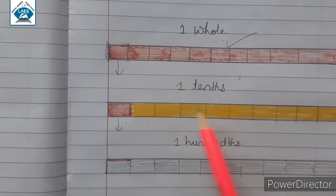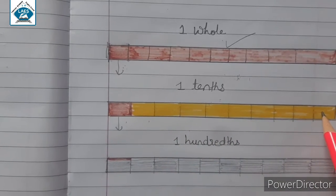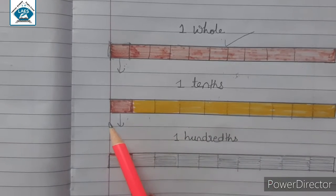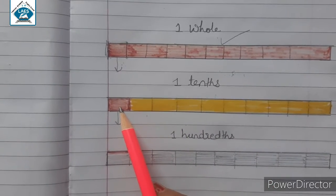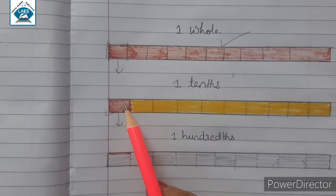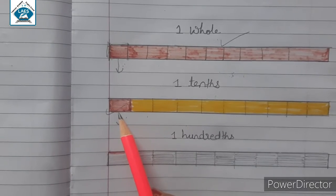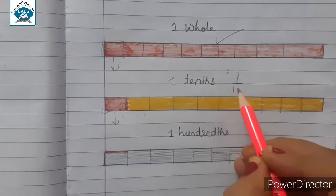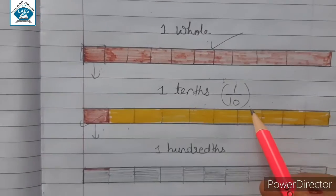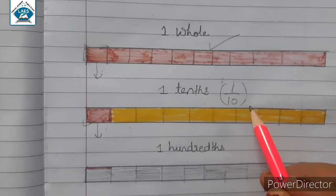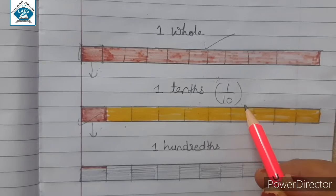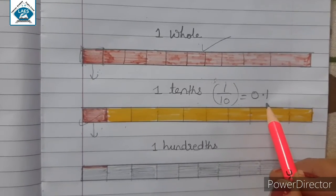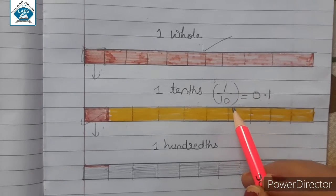The whole part was divided into 10 equal parts. You can see here this one is pointed as one tenths. One tenths means in fraction we can write it as 1 upon 10, and its value in decimal will be 0.1 when we divide 1 upon 10.